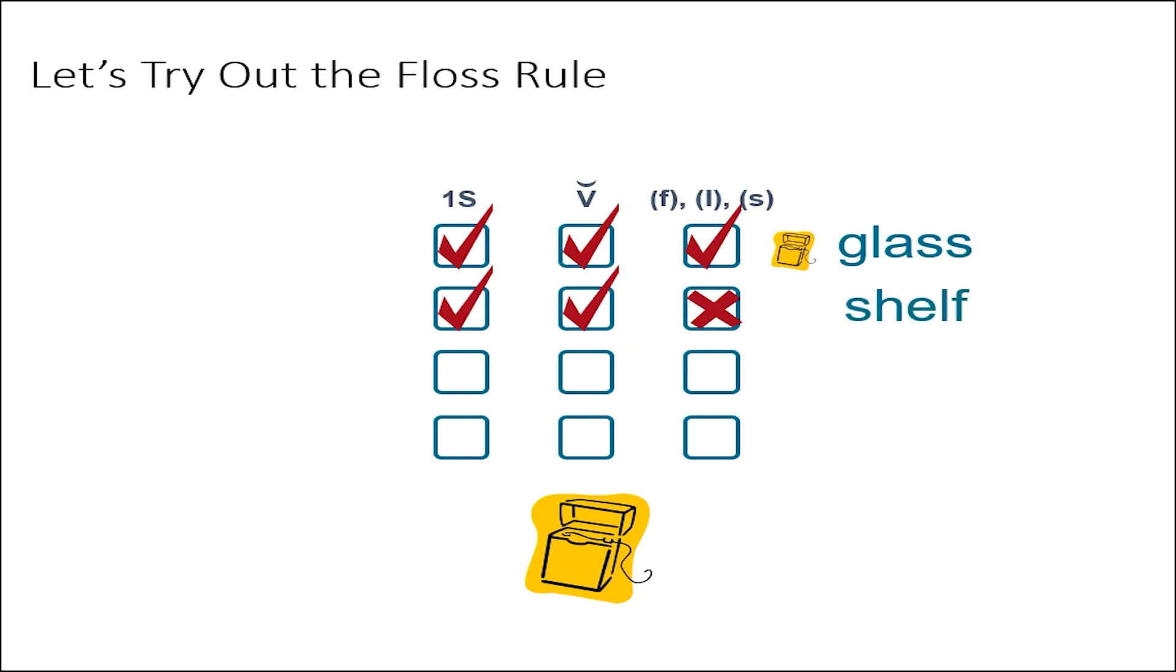The third word is thrill. Does it have all the checkpoints? One syllable? Yes. Short vowel? Yes. Is final F, L, or S right after the short vowel? Yes. We would double the final L when spelling this word.